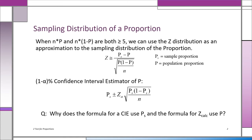If we're doing a confidence interval estimator, we're trying to estimate the population parameter. That means we are not making any assumptions about it. We have no claims, no hypotheses. We don't even know enough to make a guess about p. All we have is the data from the sample, so we use the sample proportion all the way through.